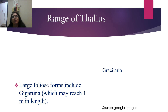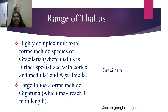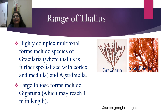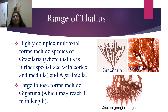Still continuing with the range of thallus — highly complex multiaxial forms include species of Gracilaria, where the thallus is further specialized with cortex and medulla, and Agardiella. You can see here Gracilaria and Agardiella. Large foliose forms include Gigartina and Gigartinaceae, which may reach up to one meter in length. You can see here how they look.